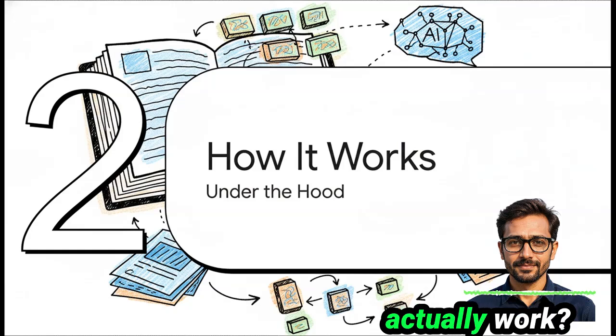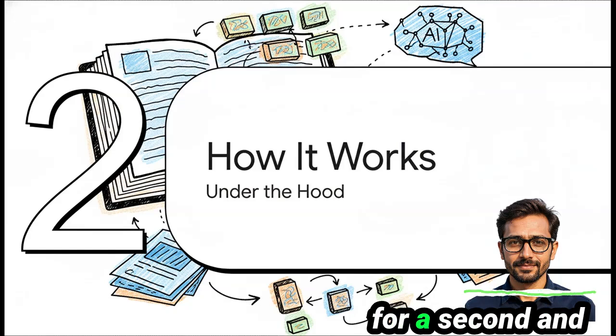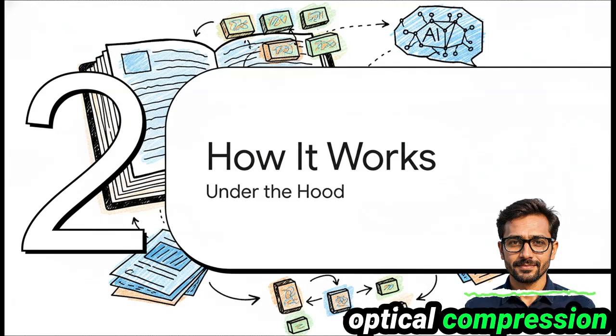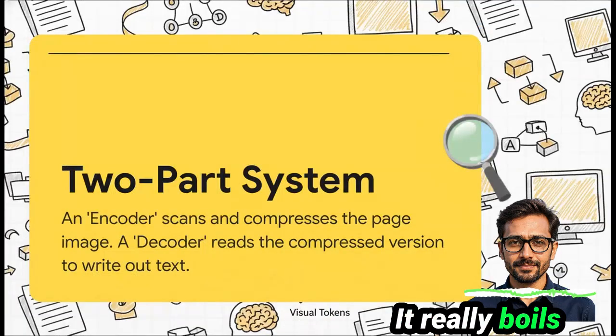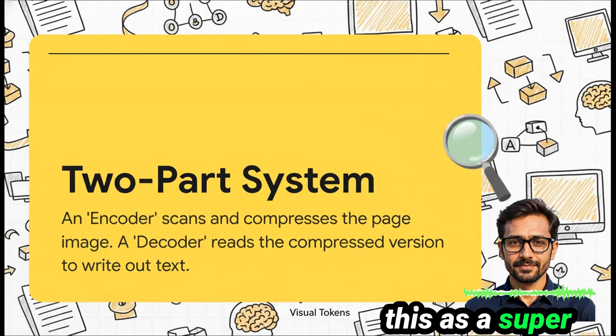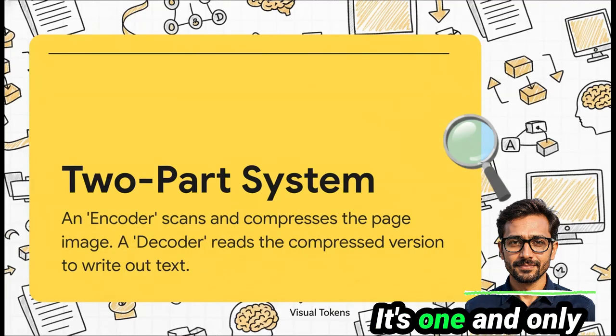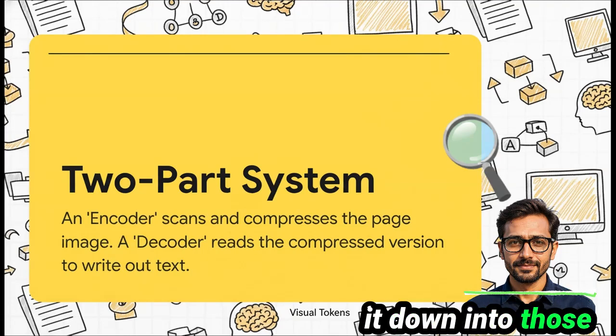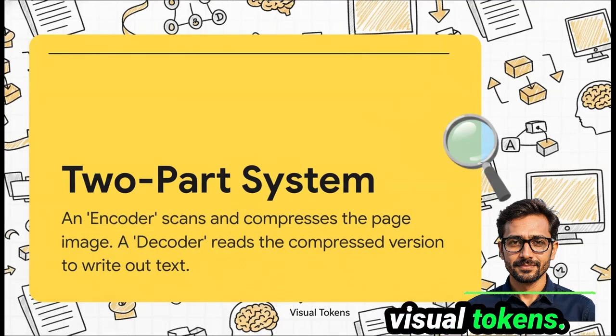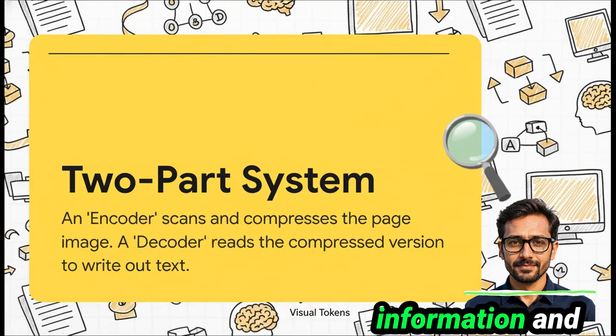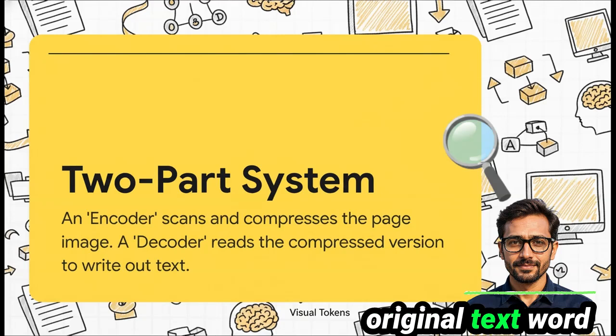So how on earth does this actually work? Let's pop the hood for a second and take a quick look at the engine that makes this whole optical compression thing possible. It really boils down to a two-part system. First, there's the deep encoder. You can think of this as a super intelligent scanner. Its one and only job is to look at that picture of the page and shrink it down into those super efficient visual tokens. Then you have the decoder, which is basically a language model that takes that compressed information and writes out the original text, word for word.